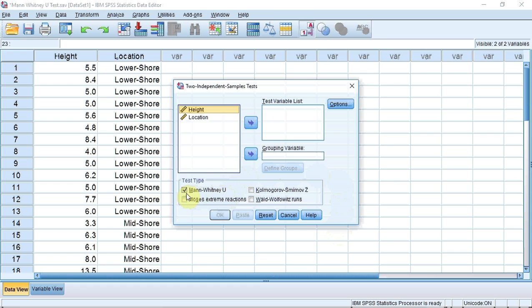The Mann-Whitney U-Test button is already ticked. I just now need to tell it the variables we're going to use. The test variable is the height, so I need to click on height and select it using the arrow. The grouping variable, the variable that tells SPSS which periwinkles were found on the lower shore, and which on the mid shore, is location.